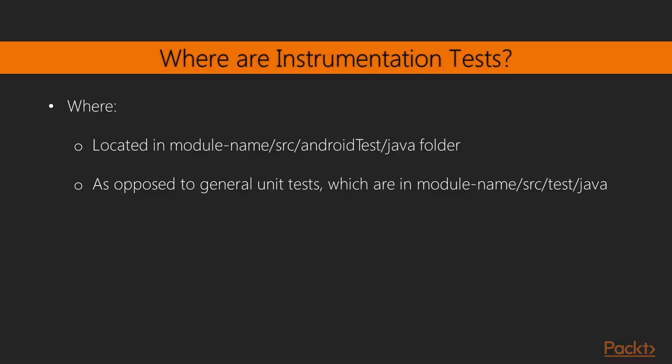So where do we put the instrumentation tests? If you've looked at Android Studio, you've noticed there are actually two different test folders. One is just called Test — that's the one we've used so far for all of our unit tests. The other one is called Android Test, and this is where we put our instrumentation tests. This is a special blessed directory that knows instrumentation tests will live here and they will have access to the Android framework.